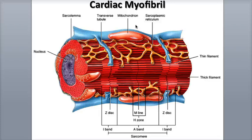The breakdown, or oxidation, of fatty acids accounts for about 60% of the heart's ATP, while glucose oxidation accounts for 35% of the ATP.